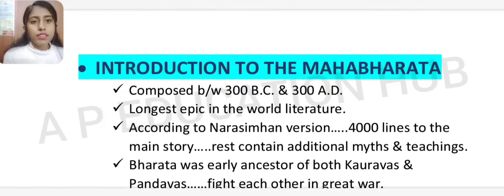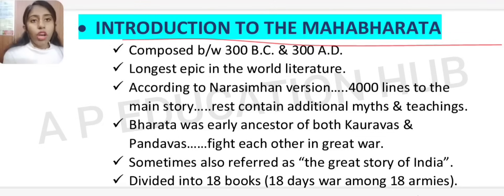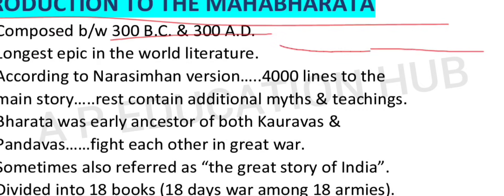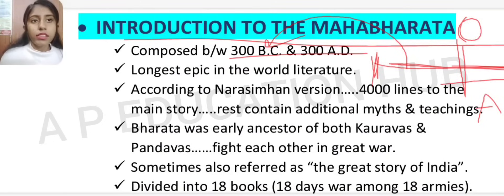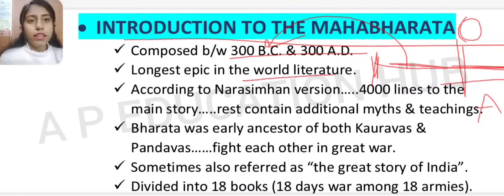Without further delay, let's discuss the introduction to the Mahabharata. The time period of its composition is 300 BCE to 300 AD. BCE stands for Before Common Era, and AD stands for Anno Domini — 300 years before the birth of Christ to 300 years after. It is considered the longest epic in the world.